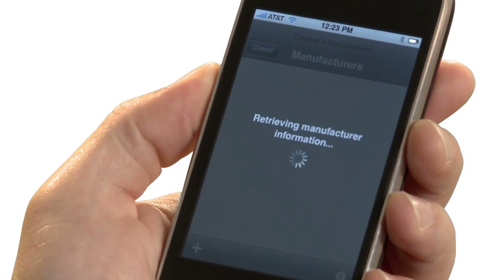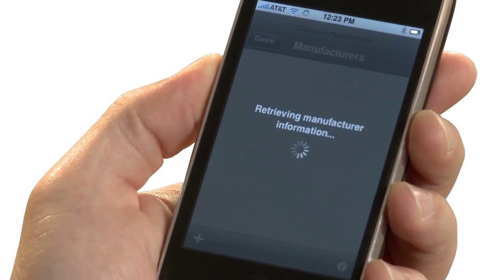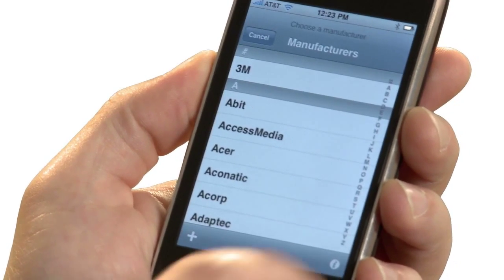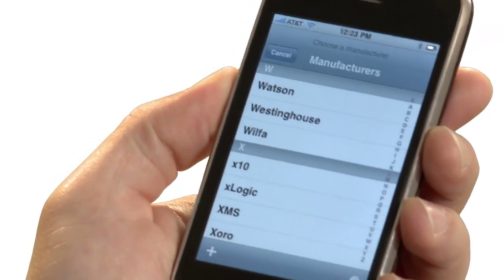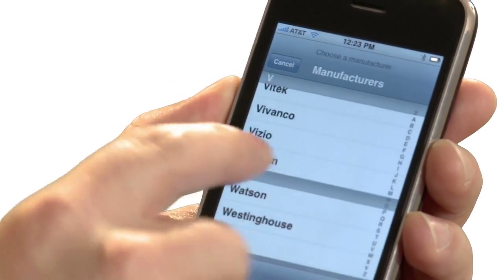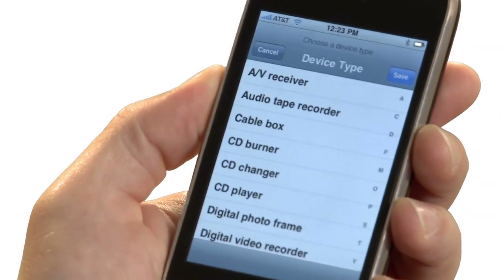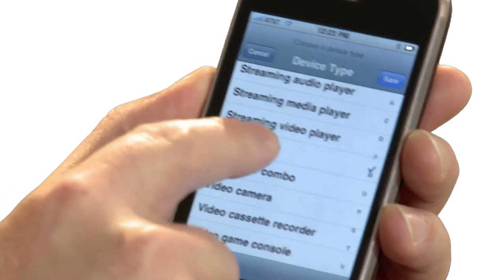Our first step in adding a device is to identify the manufacturer. I have a Vizio TV, so I'll choose Vizio from the list. Next you can choose the appropriate device type. Finally, give your new device a name so you can identify it. I'll call this one TV.